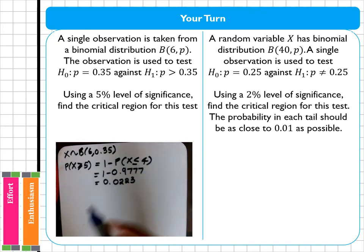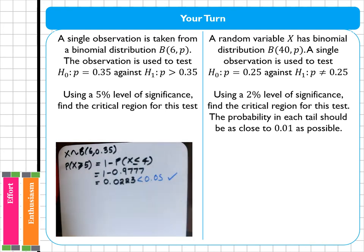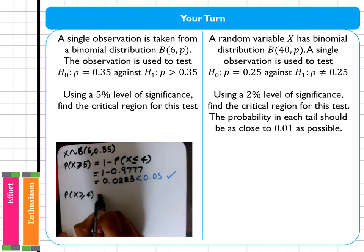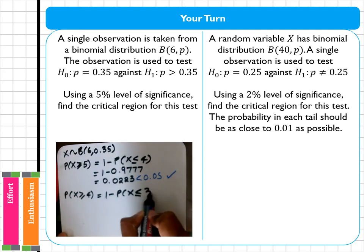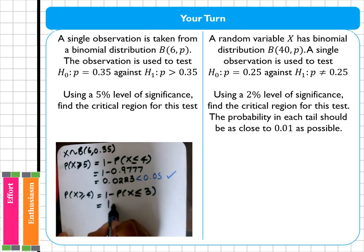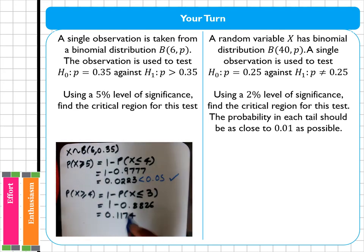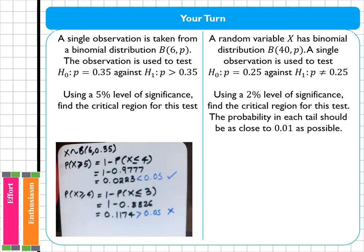Obviously I know that that is less than 0.05 so that is in the critical region. I'm then also going to test four, so probability that x is bigger or equal to four, which is one minus the probability of x being less than or equal to three, which means I have one minus 0.8826 which gives me 0.1174. Now in this case that is bigger than 0.05, so that means that is not in the critical region.